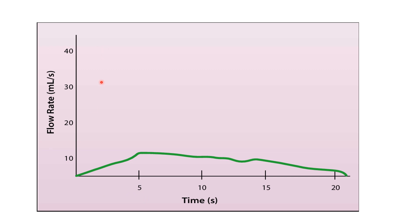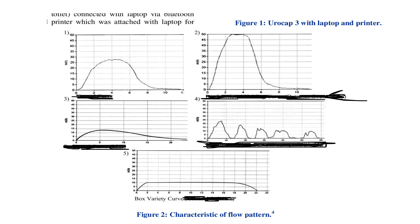I will be showing certain normal and abnormal graphs. I have hidden the diseases or pathology behind these graphs so we can differentiate which is normal and which has some kind of abnormality. This first graph is a normal graph with a normal bell-shaped curve, with a voiding flow rate of around 20 to 25 ml per second over a time period of approximately 10 seconds.